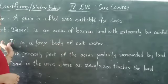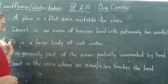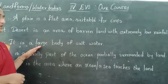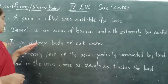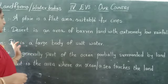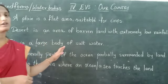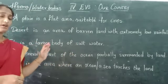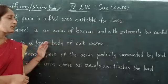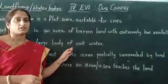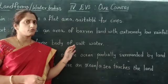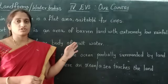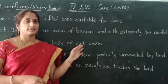Now coming to ocean. Ocean is a water body — this is not a landform, but a water body. An ocean is a large body of salt water. Salt water is present in an ocean. Have you ever seen an ocean? Examples of an ocean are the Indian Ocean, Pacific Ocean, etc.